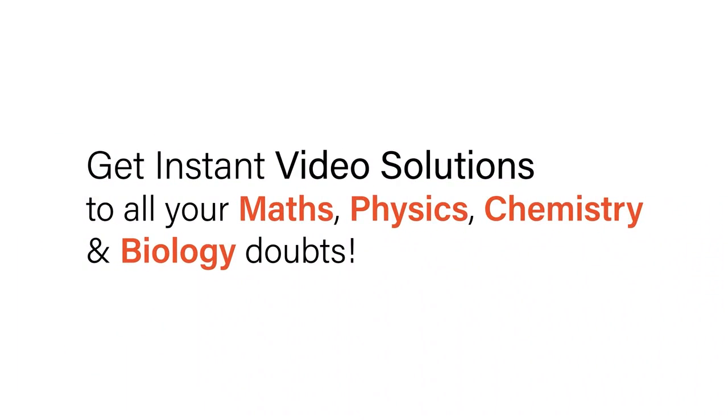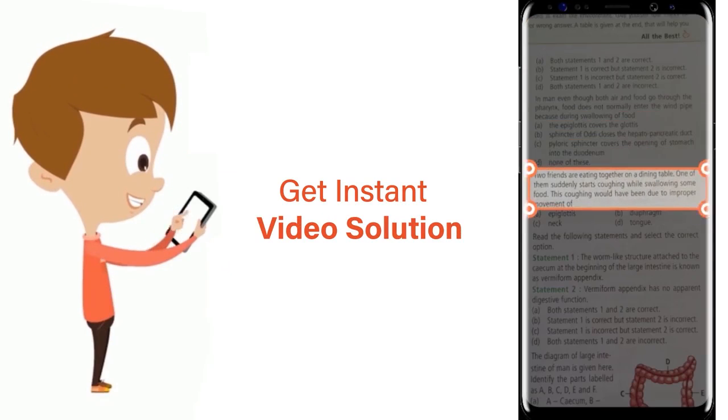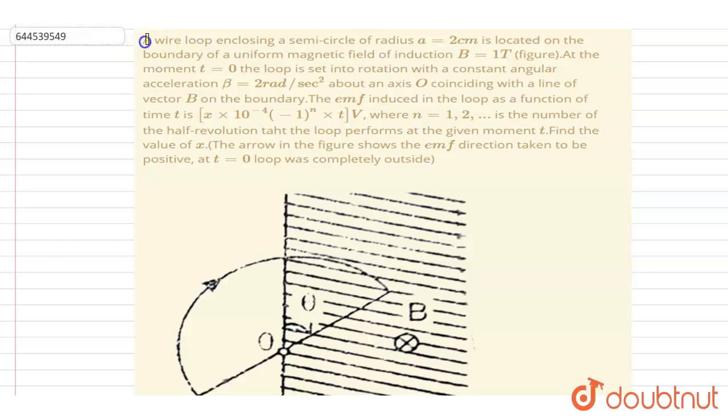With Doubtnet, get instant video solutions to all your maths, physics, chemistry and biology doubts. Just click the image of the question, crop the question and get instant video solution. Download Doubtnet app today. Hello everyone, a wire loop enclosing a semicircle of radius a is located on the boundary of a uniform magnetic field.